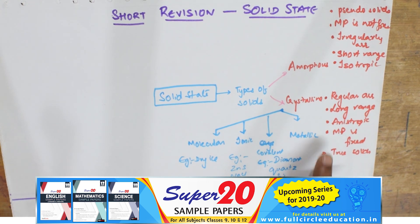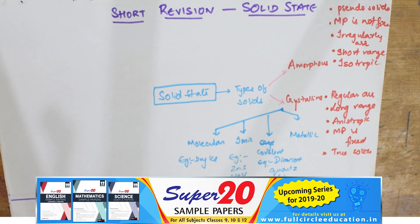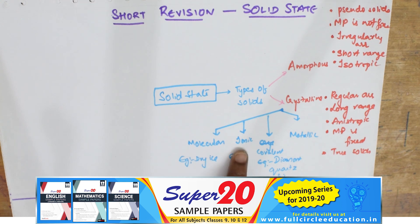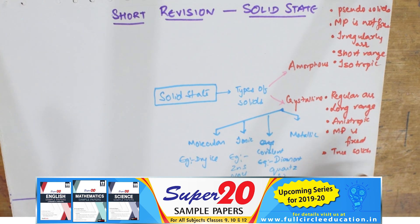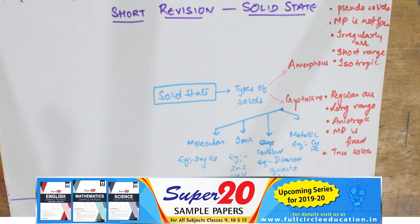In metallic solids, cations float in a sea of electrons — this is described as a metallic bond. Examples include copper and iron. To summarize the forces: molecular solids have van der Waals forces, ionic solids have electrostatic forces, covalent solids have covalent bonds, and metallic solids have metallic bonds.